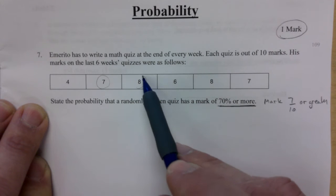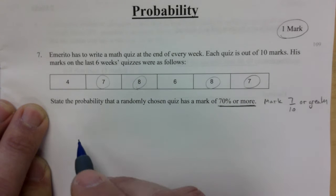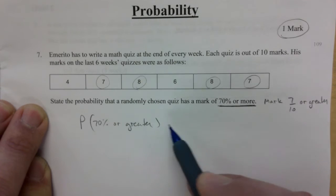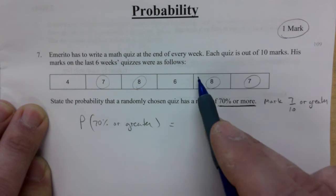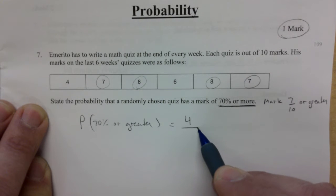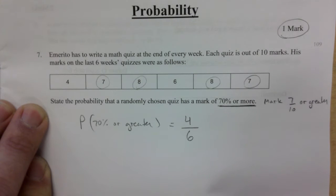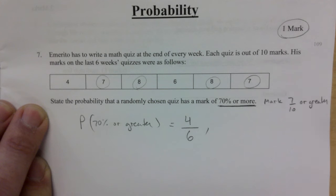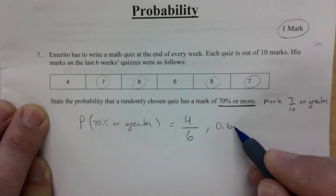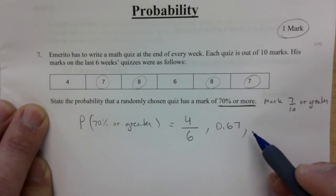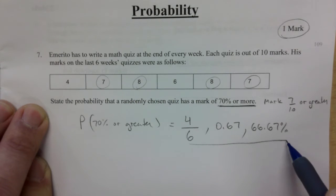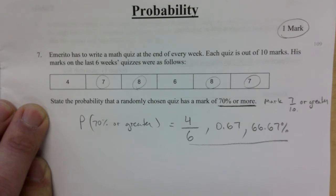Because that seven out of 10 would be 70%. So we look, there's one, two, three, four. Probability of 70% or greater. There are four quizzes out of the six total there. And that's all you need to do. You don't need to reduce this. This would be 0.67 rounded to two decimals, or 66.67%. This is the chance of you scoring a 70% or greater.